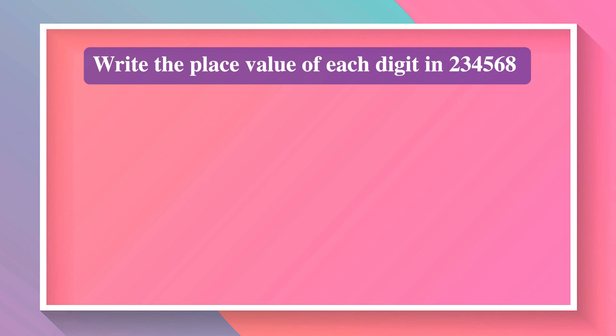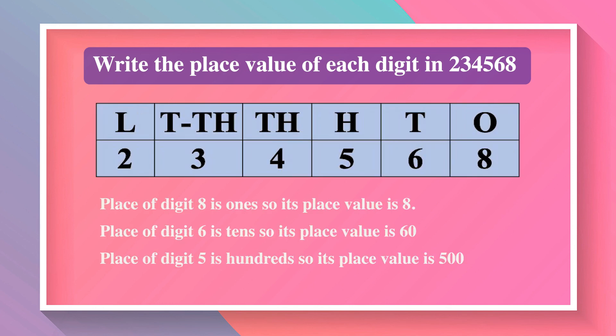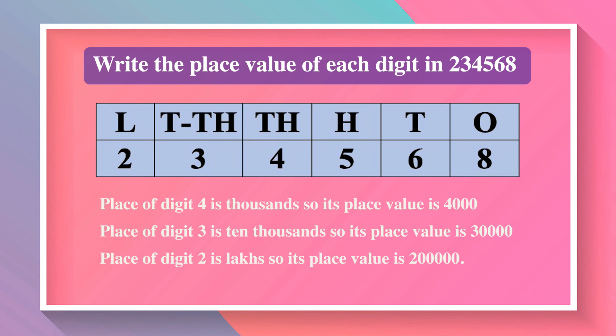Write the place value of each digit in 2,34,568. The place of digit 8 is ones, so its place value is 8. The place of digit 6 is tens, so its place value is 60. The place of digit 5 is hundreds, so its place value is 500. The place of digit 4 is thousands, so its place value is 4,000. The place of digit 3 is ten-thousands, so its place value is 30,000. The place of digit 2 is lakhs, so its place value is 2,00,000.